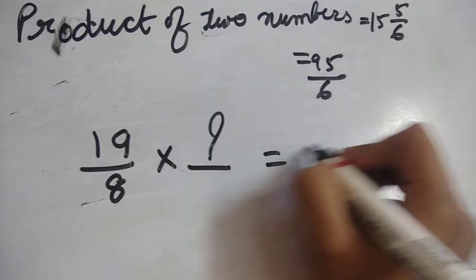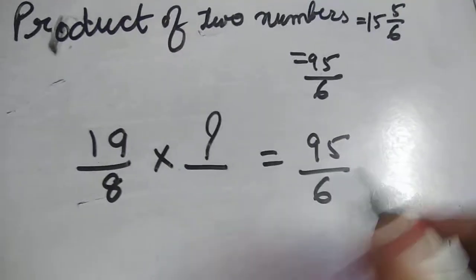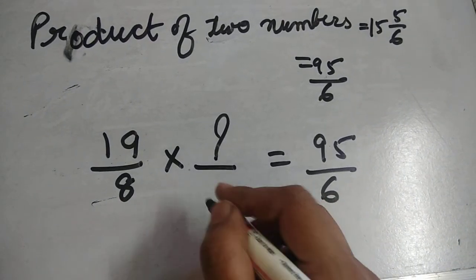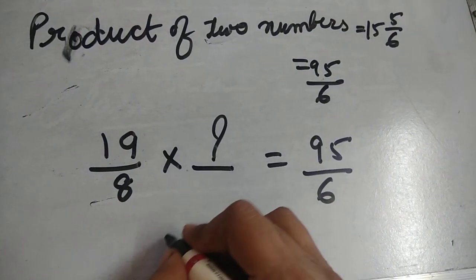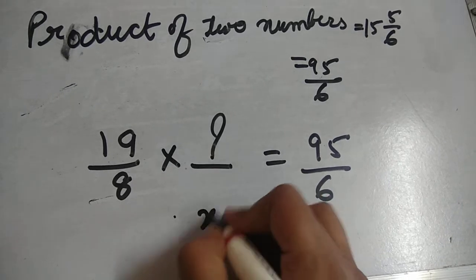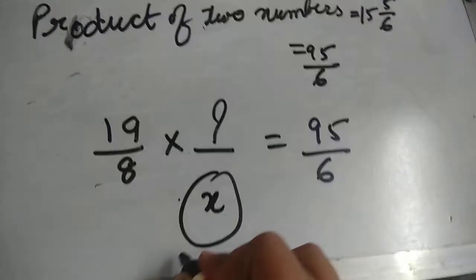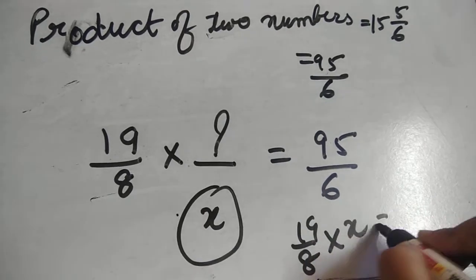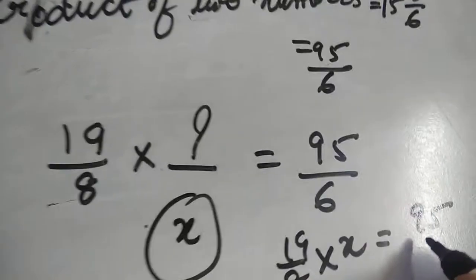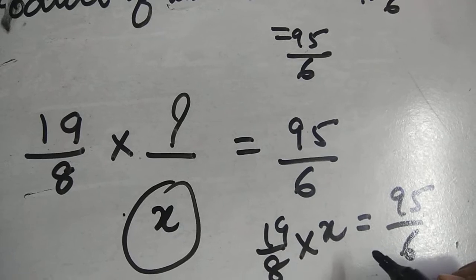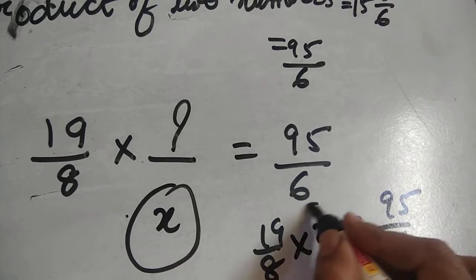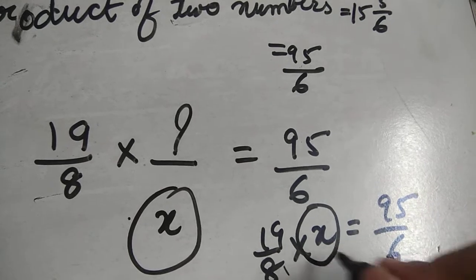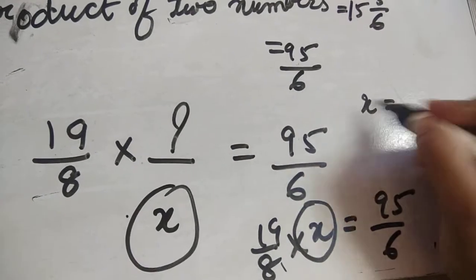The product of these numbers equals this. Let us assume that this number is X. So 19/8 multiplied by X equals 95/6. For finding this value, we have to divide this number. So X equals, what will X be? X is the other number.